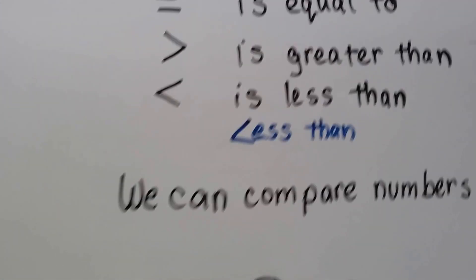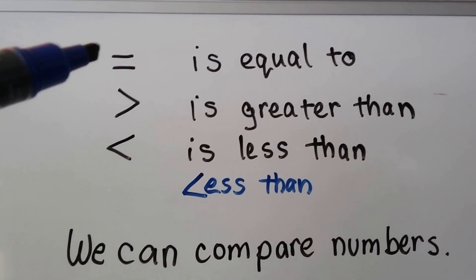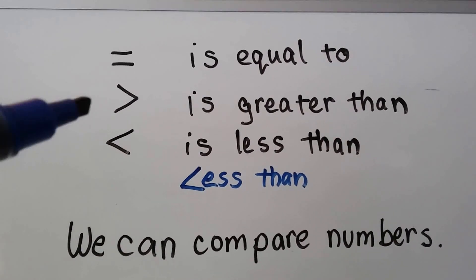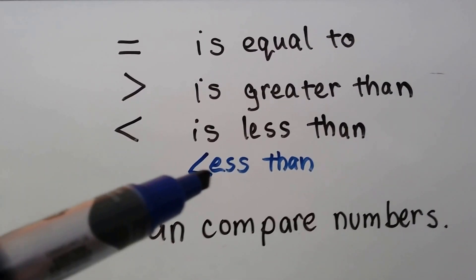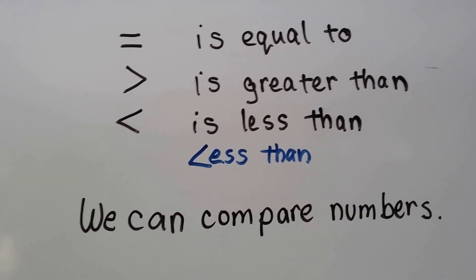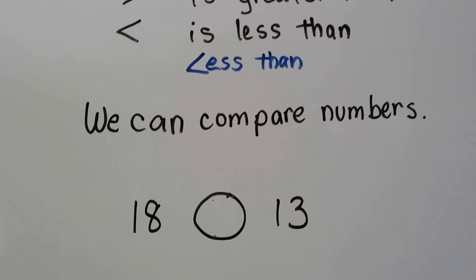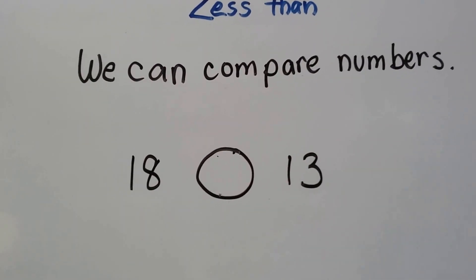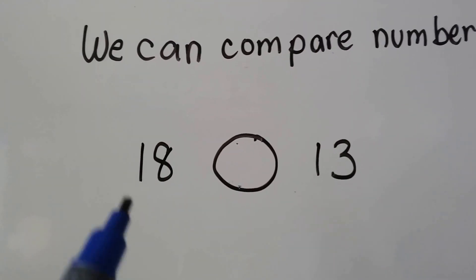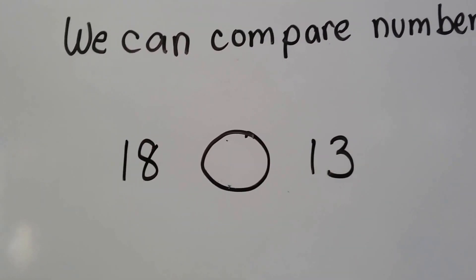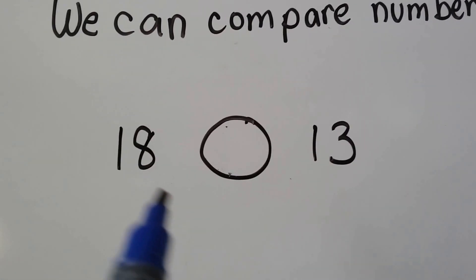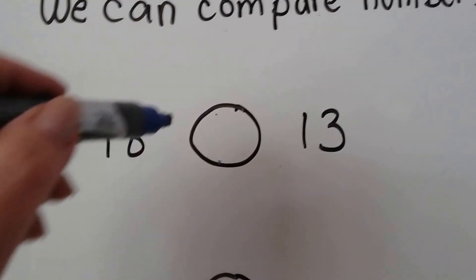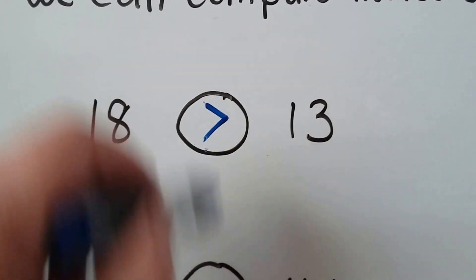So remember: this is an equal sign and it means is equal to. This is greater than. This is less than, and it looks like an L almost, so you know that's the less than. We can compare numbers — we have an 18 and a 13. They have the same number of tens; 18 has one 10 and 13 has one 10. So we look at the ones place: this has eight ones and that only has three ones. So 18 is greater than 13.